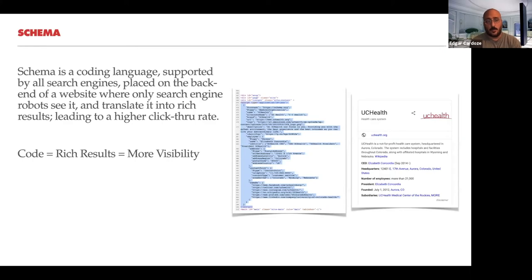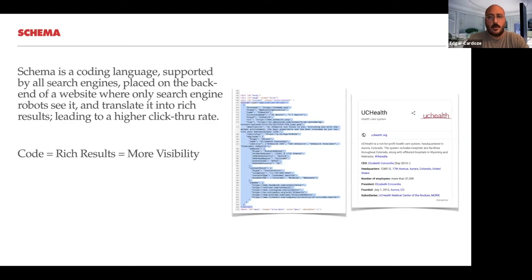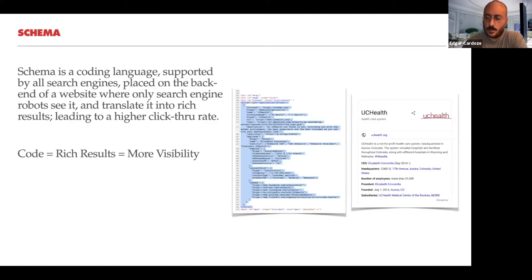You can use schema on your site — go to schema.org where there's a schema type for everything: medical conditions, books, concerts, events. Using schema on your site creates the rich results you see in the SERP. It's definitely recommended. For example, one of our clients uses medical organization schema on the backend, which generates a branded knowledge panel on Google.